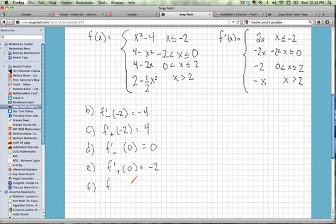And then they want us to look at f prime from the left of 2 and, of course, f prime from the right evaluated at 2. So if we're coming up on 2 from the left, we're dealing with this piece right here.